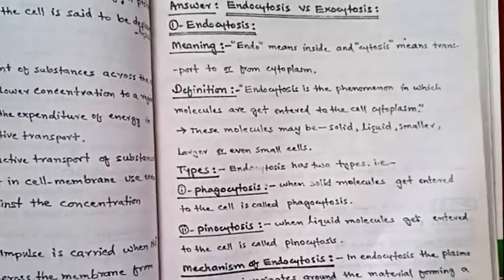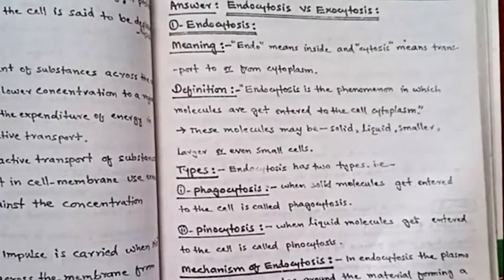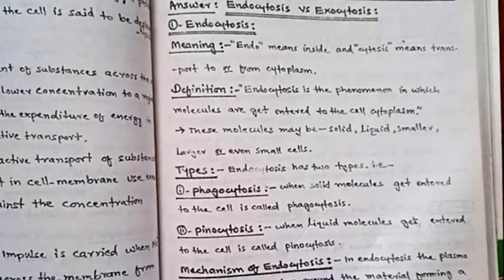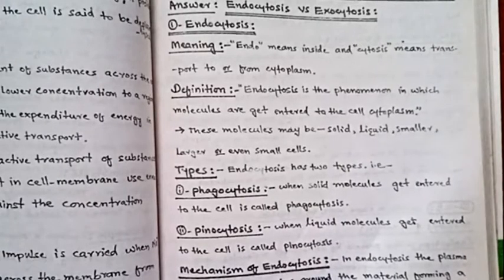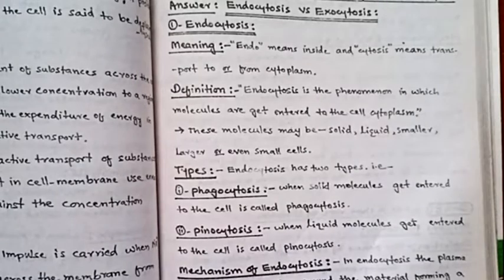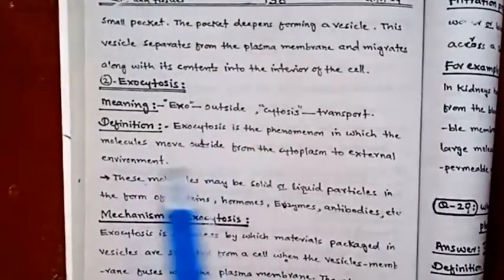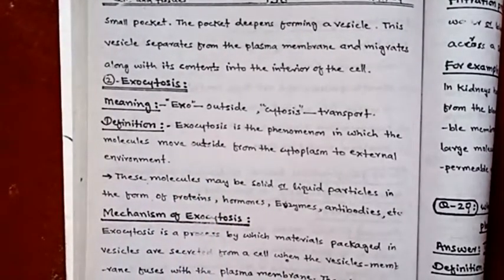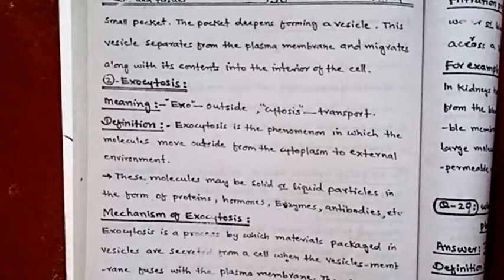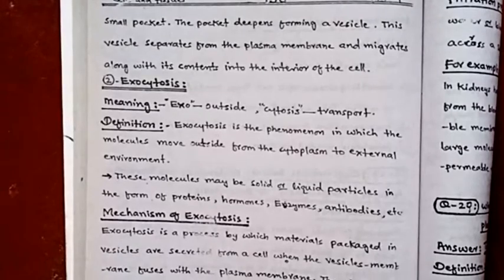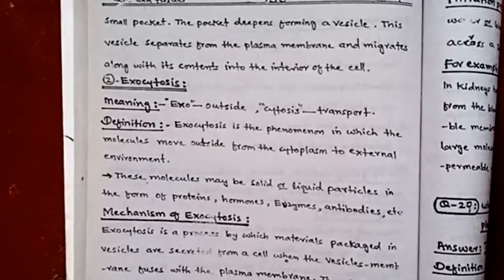The membrane invaginates to take material inside. It forms a small pocket around the material. The pocket deepens, forming a vesicle. This vesicle separates from the plasma membrane and migrates along with its contents into the interior of the cell.